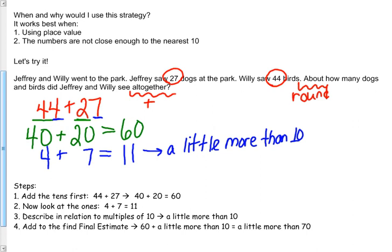So 60 plus 11 gives me 71. And because we always want it to be close to a multiple of 10, we're going to say that 71 is a little more than 70.